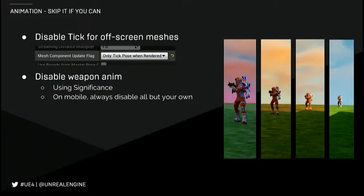But the fastest animation is the animation you don't do. One of the settings we use is the 'only tick pose when rendered' option, where when meshes are off screen we don't animate them anymore. We also found we could avoid animating weapons beyond a certain distance — you really don't notice it. On mobile currently, we only animate the weapon you're holding, not the weapons other players are holding. We couldn't do this for backpacks or helmets though, because those are copying state from the underlying character — if you stop doing that, they end up floating off the character.